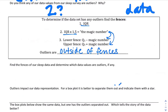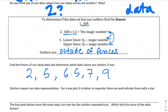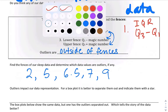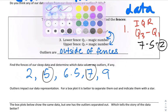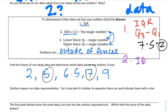Let's use our sleep data. Our five-number summary: min is 2, Q1 is 5, median is 6.5, Q3 is 7, max is 9. Step one: interquartile range is Q3 minus Q1, so 7 minus 5 equals 2. Step two: take the interquartile range and multiply by 1.5 — so 2 times 1.5 is 3. That 3 is our magic number and will help us find our fences.